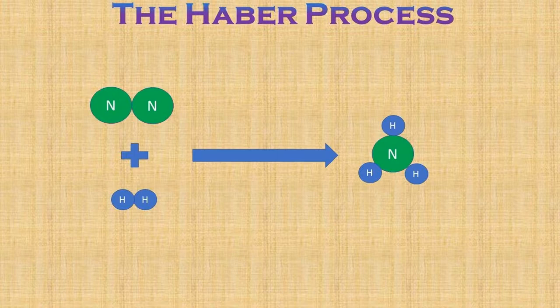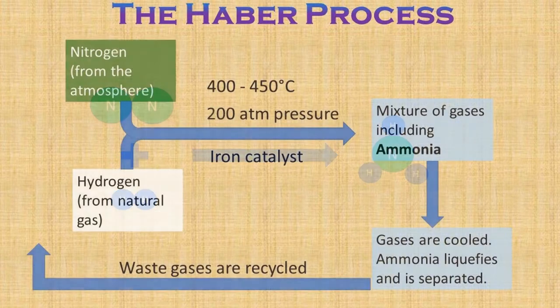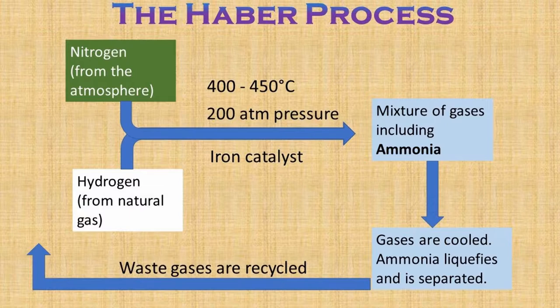Nitrogen and hydrogen are combined at high temperature and pressure in the presence of an iron catalyst, and the process produces ammonia. The mixture of gases is cooled and the ammonia, which liquefies at only minus 33 degrees Celsius, becomes liquid and is easily removed. The remaining nitrogen and hydrogen are fed back into the beginning of the process.